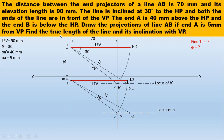Our objective is to find the true length of the line and its inclination with VP. The true length in top view makes an angle of phi with respect to VP. I hope you can measure this true length and angle phi. Try to solve it by yourself without watching the video — that will be very beneficial. Comment your answer. Thank you.